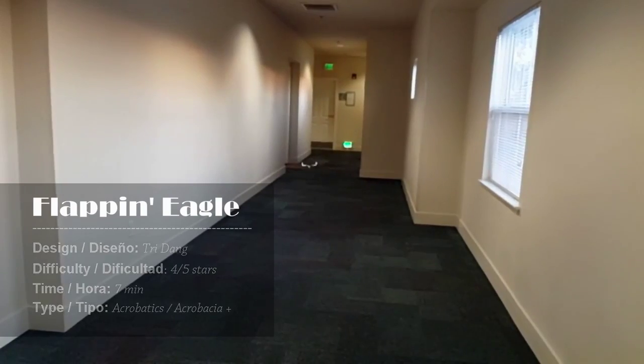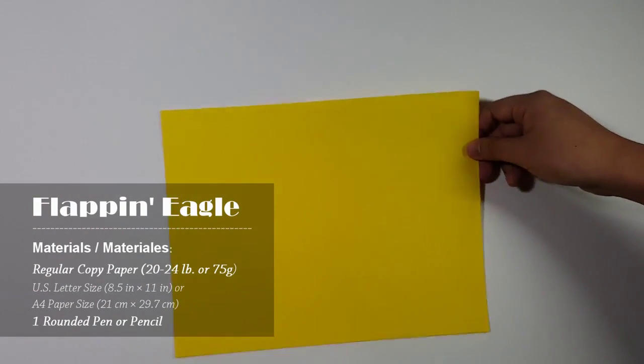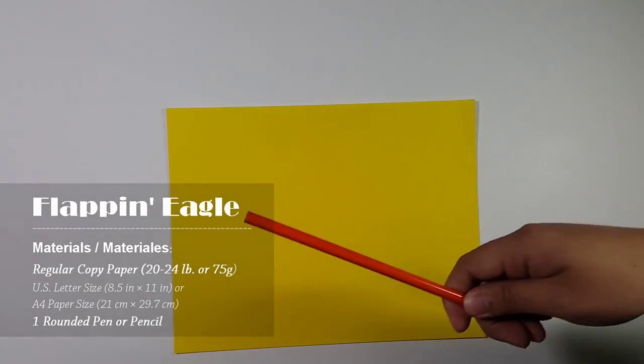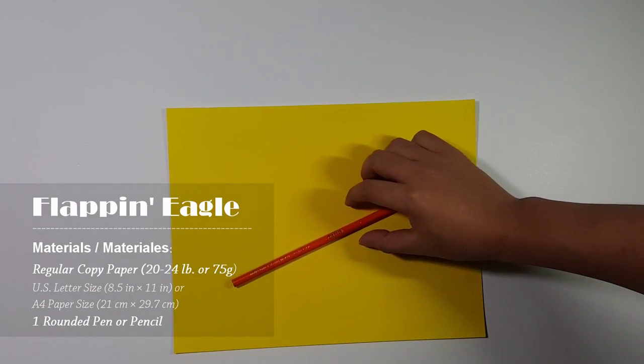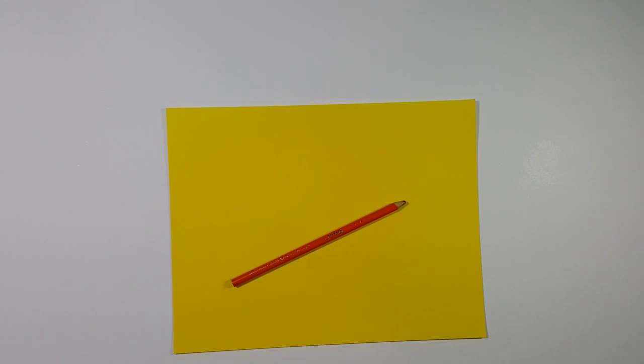To make the flapping eagle, you need a printing paper. You can use either your selected size or A4 paper. Keep in mind that the thinner the paper, the better the eagle can flap. Also, you need a pencil to curve the wings of the plane later on.